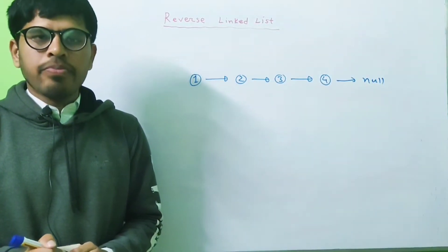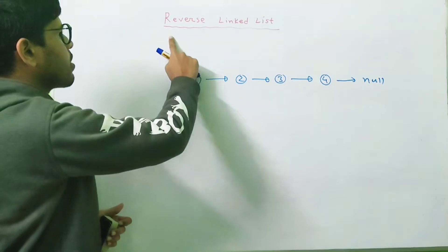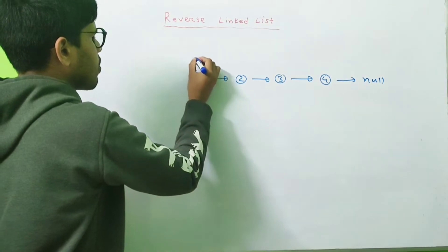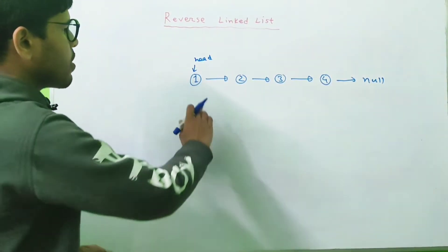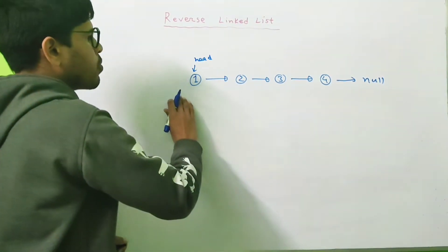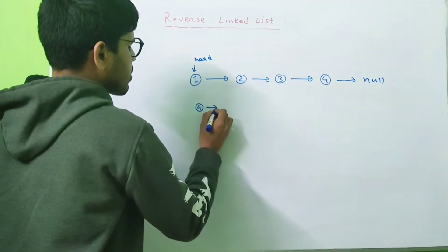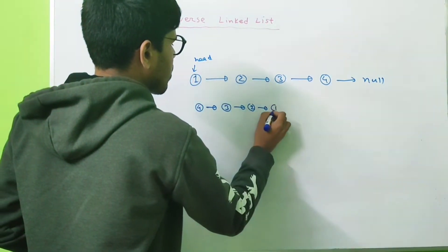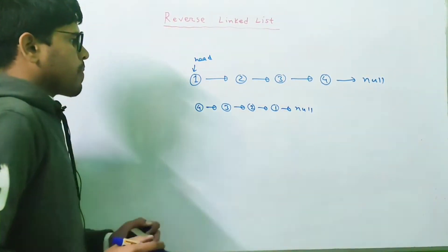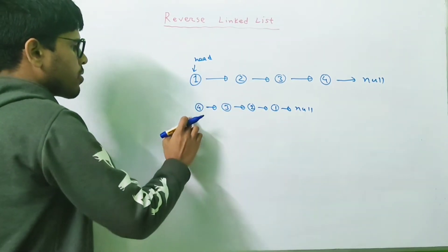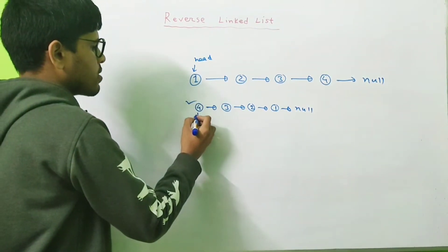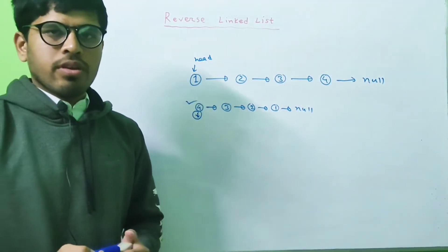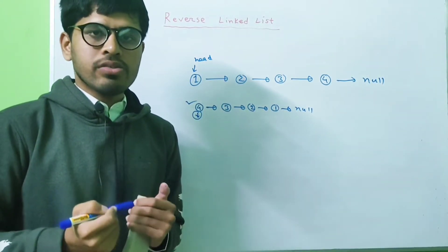Hey, what's up guys, welcome back to this video. In this video we're going to solve the question 'Reverse Linked List'. We're given the head of a linked list, and we have to reverse it. So if we're given the list 1 2 3 4, we have to return 4 3 2 1. This is a famous coding interview question.